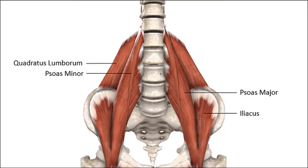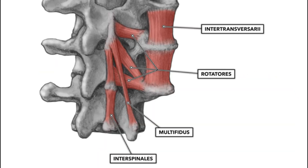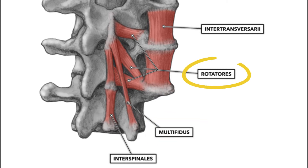Then you have muscles in the deeper region. Fixed to the lower back, you have the quadratus lumborum, the psoas minor and major. Then you have muscles within the vertebral column: the intertransversarii between the transverse processes, the interspinalis between the spinous processes, the multifidus, and the rotators.